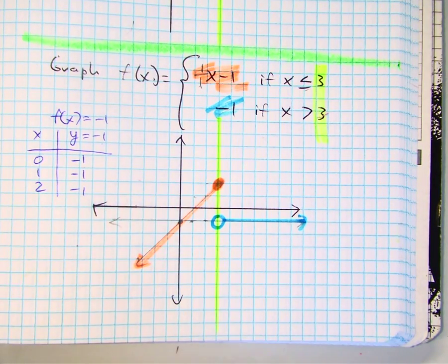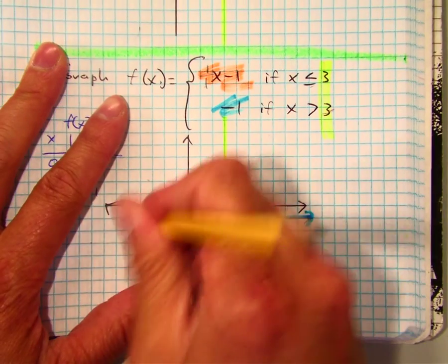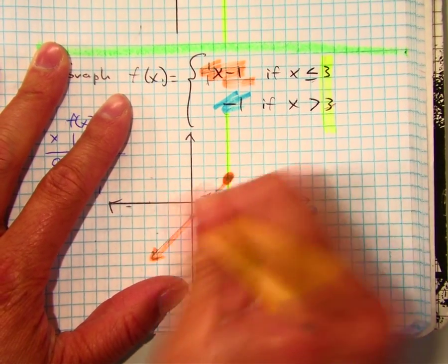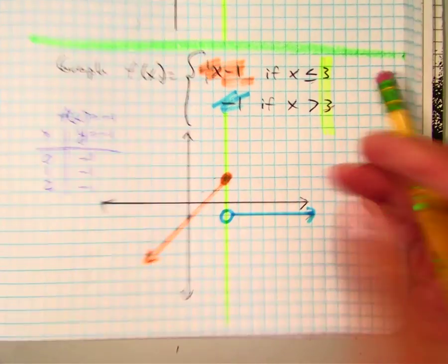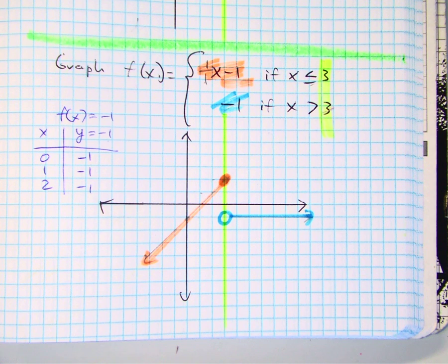Erase your marks. Class, is this continuous or discontinuous? This would be a discontinuous. Is this removable or is this a jump? This would be a jump discontinuity.